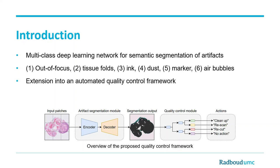An overview of the proposed framework is shown on the slide. The framework works as follows: a whole-slide image is split up into smaller patches. These patches are then fed through the artifact segmentation module. Then the individual patches are stitched back together into a full-scale segmentation map. The quality control module uses the segmentation map to return one of four actions, which can be used by pathologists to improve the quality of the whole-slide image for a more accurate analysis.